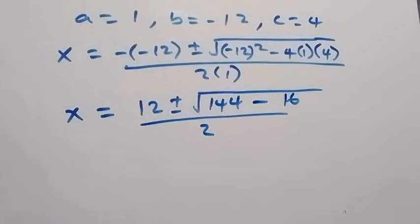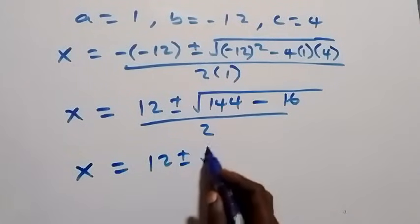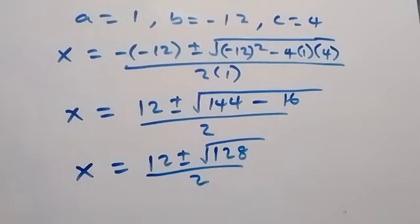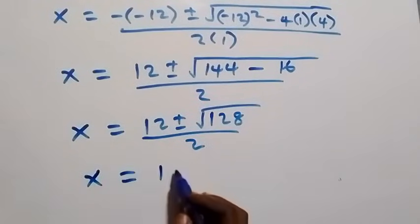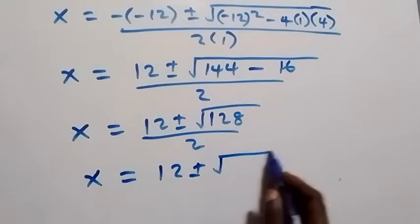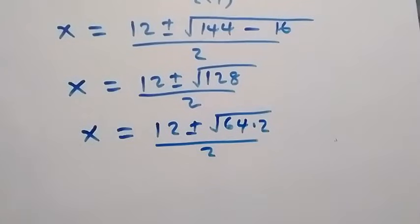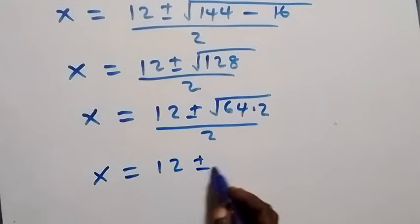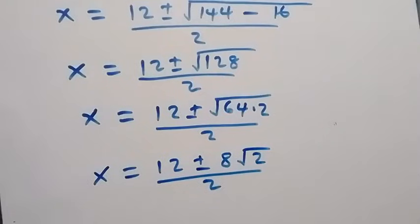So x equals 12 plus or minus root 128, over 2. Since we can separate 128 as 64 times 2, we have x equals 12 plus or minus root 64 times 2, over 2. Root 64 is 8, so this gives us x equals 12 plus or minus 8 root 2, over 2.